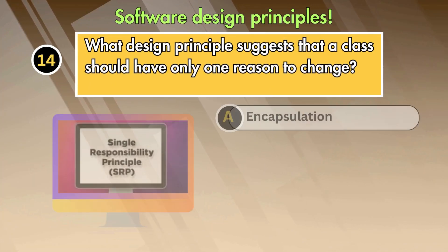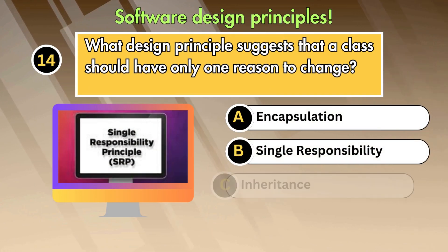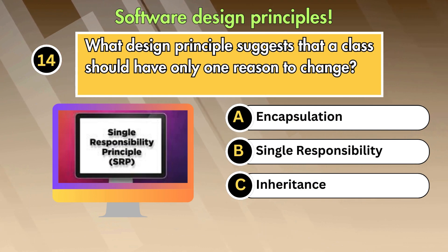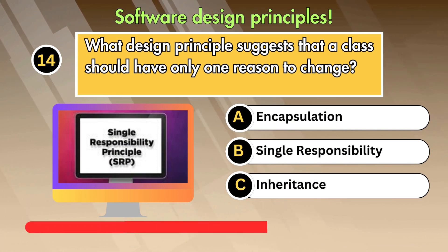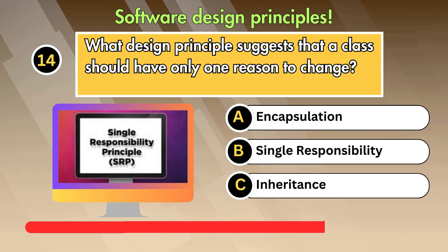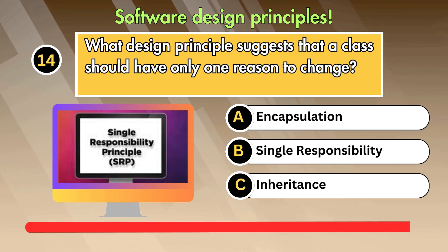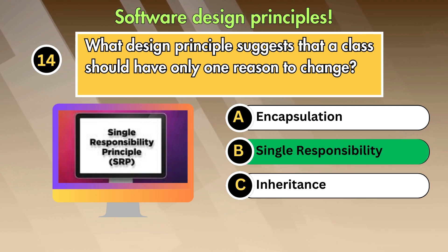Question 14: What design principle suggests that a class should have only one reason to change? Option 1: Encapsulation. Option 2: Single responsibility. Option 3: Inheritance. Answer is: Single responsibility.